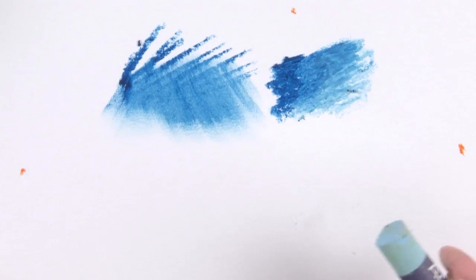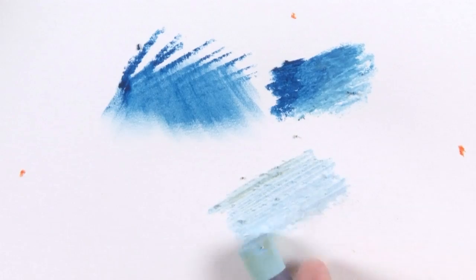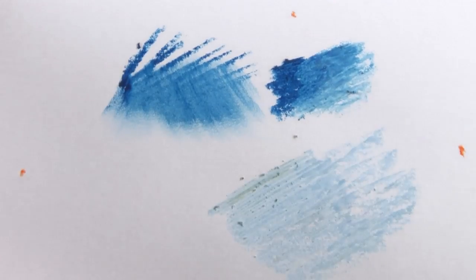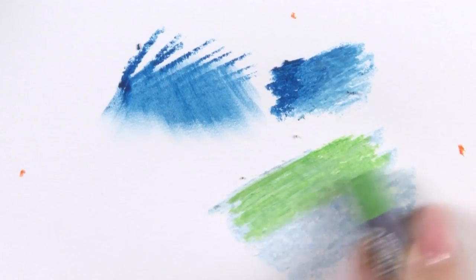What is quite nice to do is something called Sgraffito, and what that's all about is putting layers of light color down, one on top of each other, layering it like this.